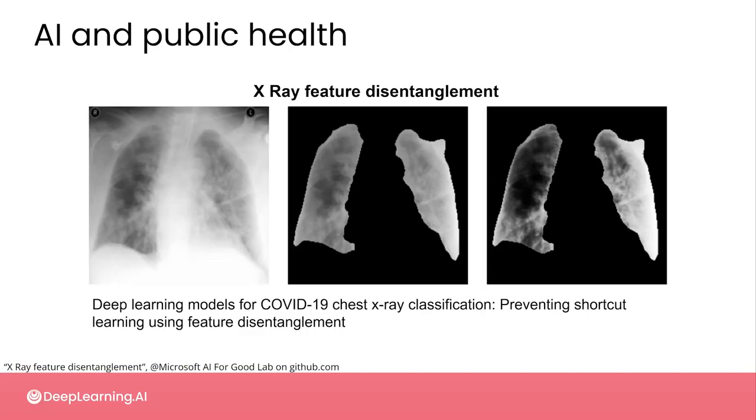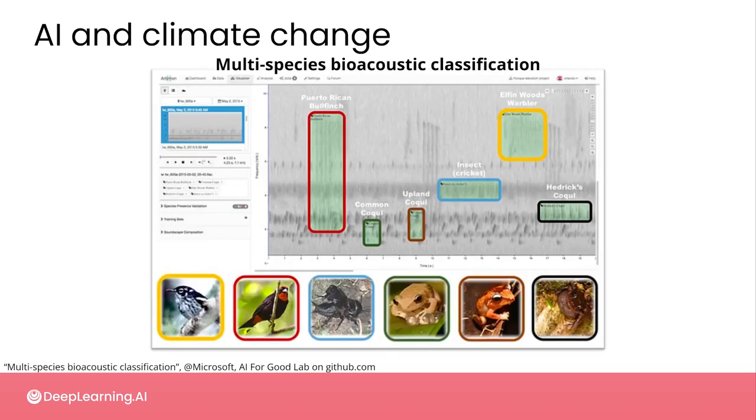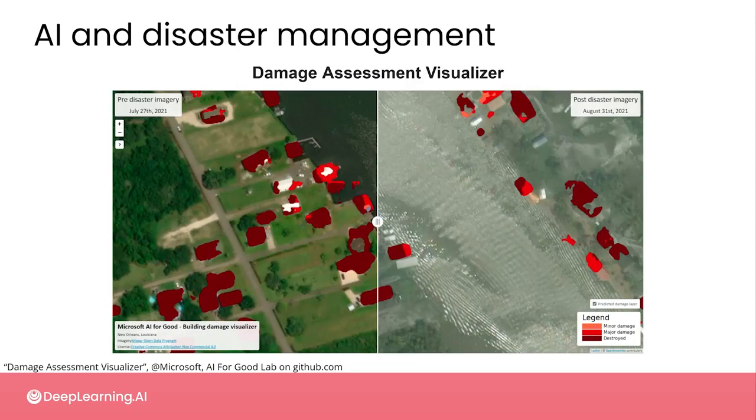I'd now like to spend a little time discussing some of the potential issues that you will need to keep in mind when it comes to applying AI to your projects. The goal of any AI for Good project is, of course, to have a positive impact on the world, whether that's improving people's health, reducing the impacts of climate change, or helping communities recover from a natural disaster, or something else.